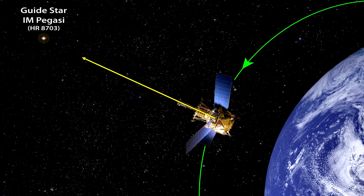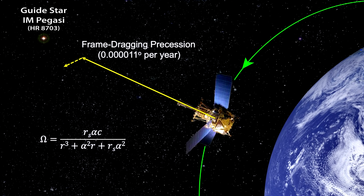By 2011, data analysis had confirmed that frame dragging did occur and measured it to within 15% of the amount predicted by the Kerr metric for Einstein's field equations.